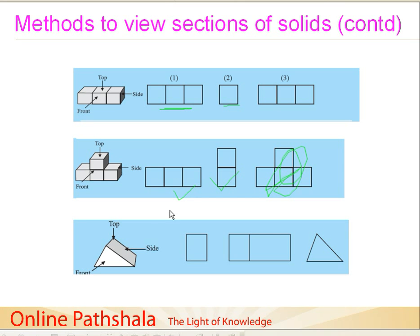Let's take another example. If I am standing here, I can just see this triangle — so this is my front view. When I look from the top, I can see this shape plus a little bit of portion on this side as well — this is my top view. And when I look from the side, I can just see this one rectangle — so this is my side view. That was the third method of viewing sections of solids, and with this we conclude our session. Thank you.